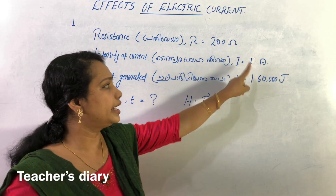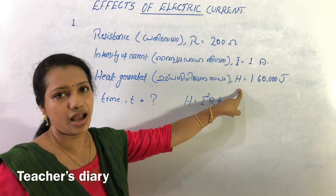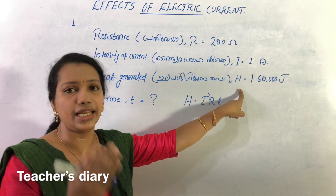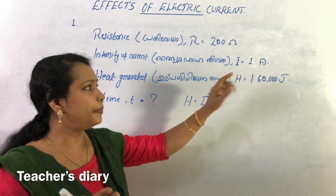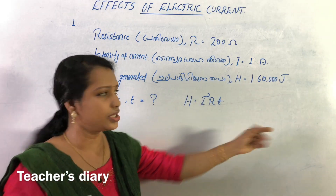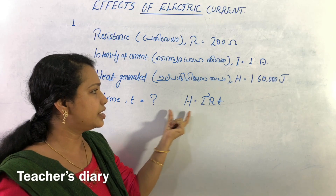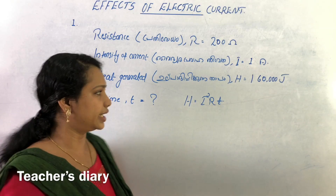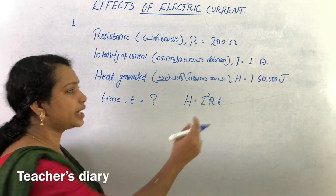Given: R, I, and H. We need to find T — time. We connect the equation: H is equal to I squared R T. We need to isolate T on the left side.